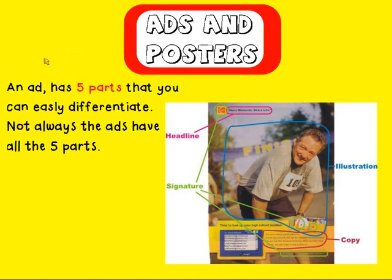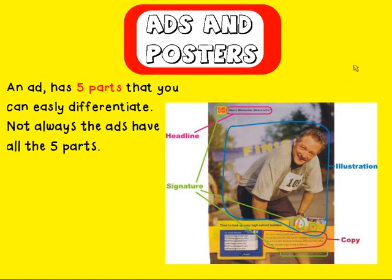So the ads and posters have five parts — five parts that you can easily differentiate, but not all the ads you can see have all these five parts. But we're gonna do a poster with all these five parts. The first part: the headline. The headline is a short line of words. The second part is the illustration, the picture, the image, the drawing. The third part is the copy, with a longer message giving information. And the fourth and fifth are the signature — the name of the company — and a logo for this company. So let's have a look at these five parts in detail.